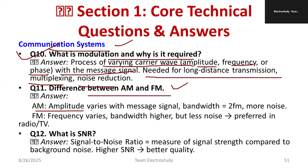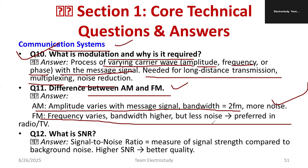Difference between AM and FM: AM (Amplitude Modulation) varies amplitude with the message signal; bandwidth is two times the maximum frequency but gives more noise. FM (Frequency Modulation) varies frequency, has higher bandwidth but less noise, and is preferred for radio and TV applications. Signal-to-noise ratio measures signal strength compared to background noise — we need a high SNR for better quality.